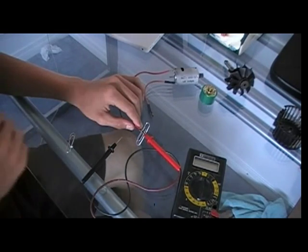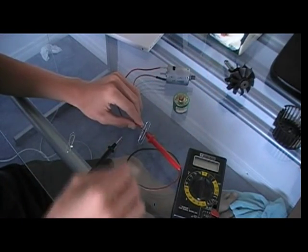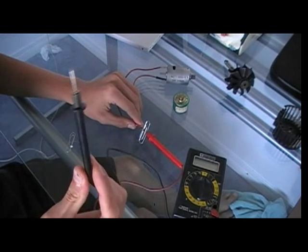To start you're going to take the wires coming off of the motor and connect them to the electrodes of the voltmeter.